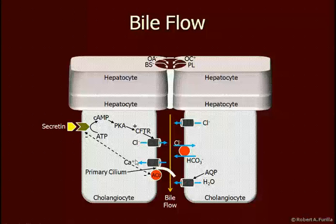Cholangiocytes are then responsible for removing more chloride and putting more bicarbonate in there. There's a CFTR chloride channel here — CFTR stands for Cystic Fibrosis Transmembrane Regulator. This is triggered by protein kinase A. Secretin triggers the formation of cyclic AMP, and this cascade opens up chloride channels.